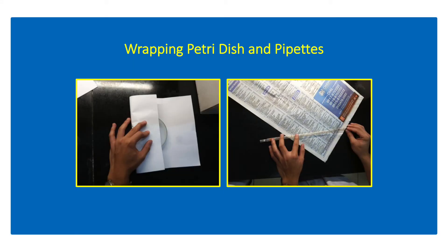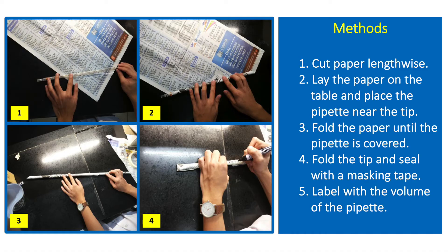Wrapping is a technique done to prevent contamination of the petri plates and pipettes after they have been autoclaved. In wrapping pipettes: